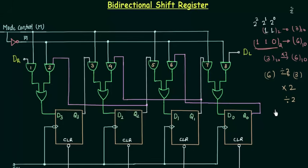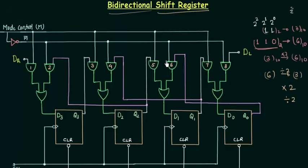Now if you want to divide and multiply bits by using the shift register, you have to design your shift register in a way that it works in both directions. By both directions I mean it must have the serial left shift mode as well as the serial right shift mode. That's why we call it bi-directional — because it is operational in both directions.